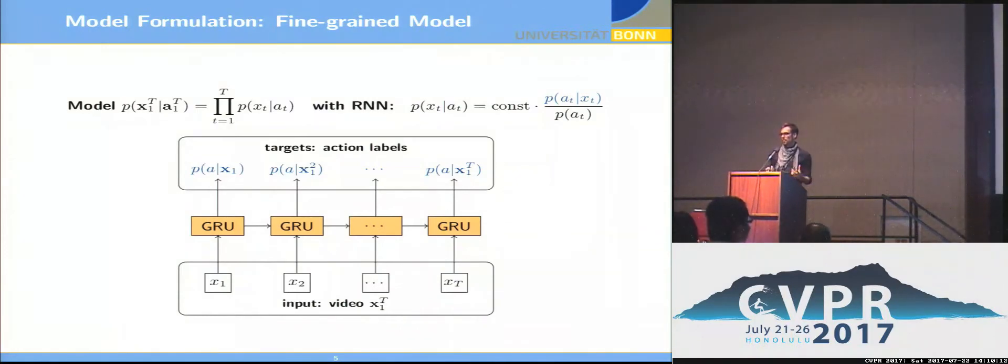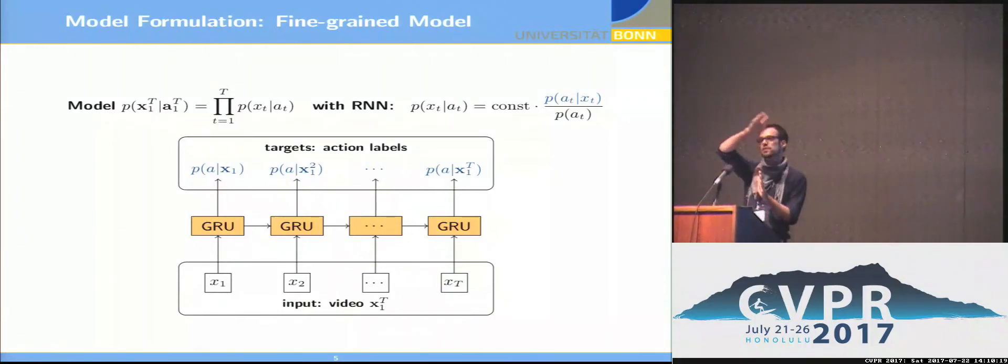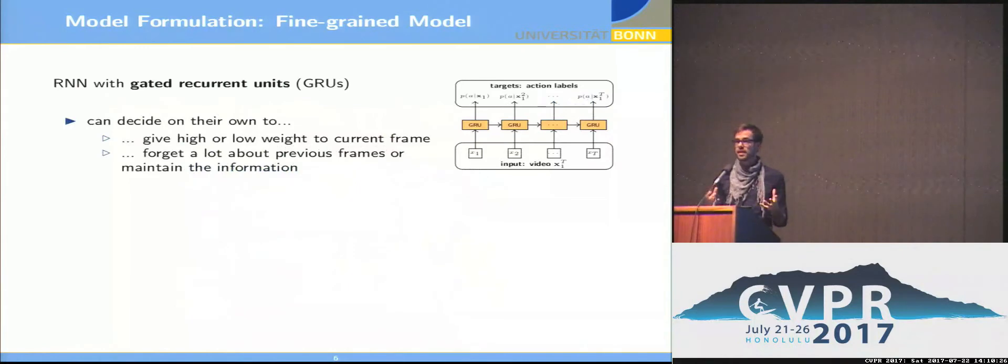In order to model this probability, we now use a recurrent network. So the inputs are all the video frames, then we have a layer of gated recurrent units, and at each frame the output is a distribution of all action labels given all previously seen frames.